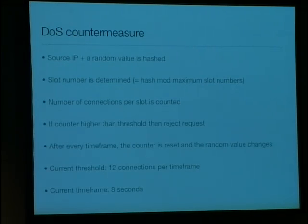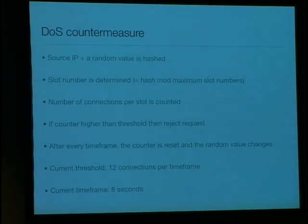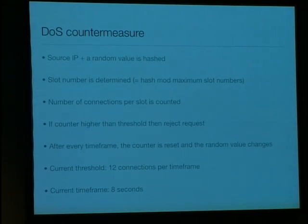Here's how we implemented our countermeasure. We use the source IP from the client plus a random value which changes every eight seconds. We hash this and divide by the number of slots, taking the remainder as the slot number. For every slot, the number of connections is counted per time frame. If the count is higher than a certain threshold, the request is simply rejected before the fork happens. After every eight-second time frame, the count is reset and the random value changes.